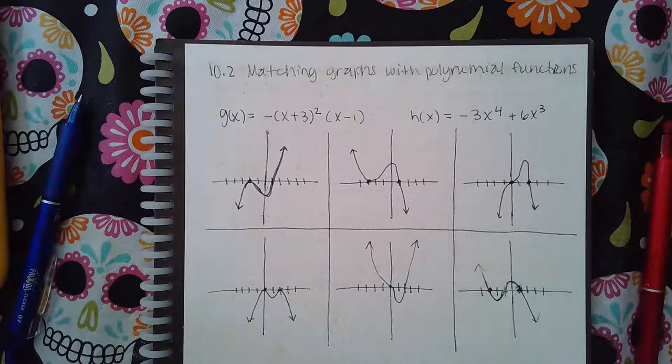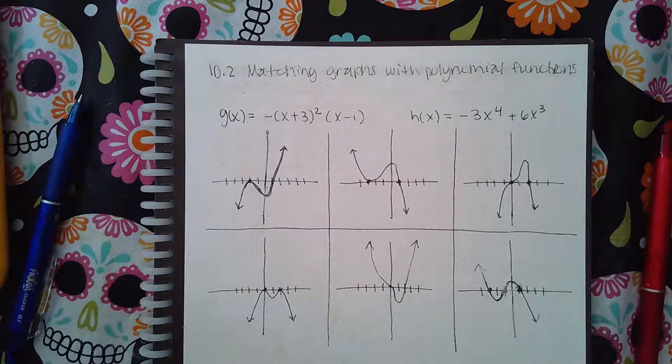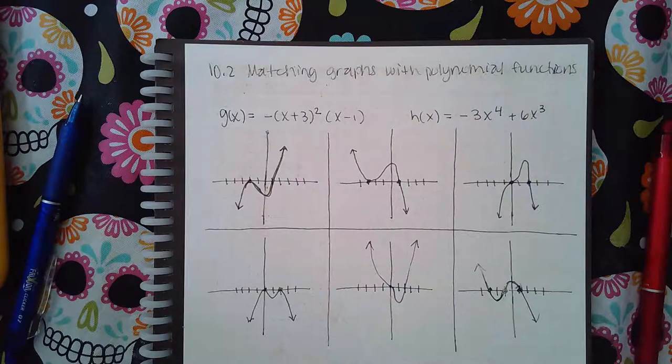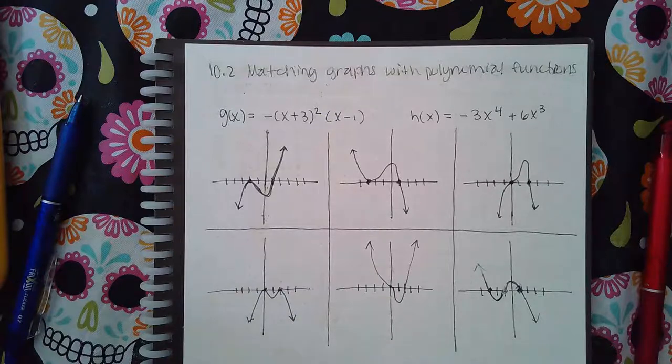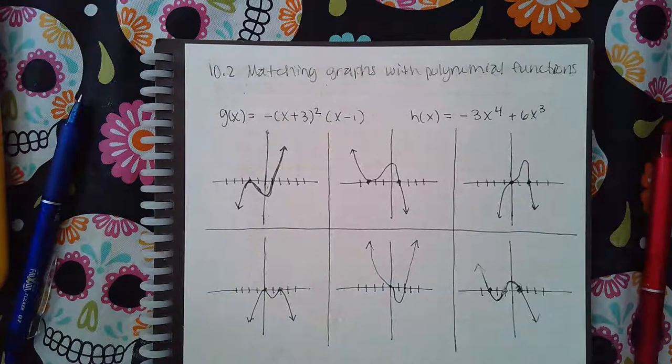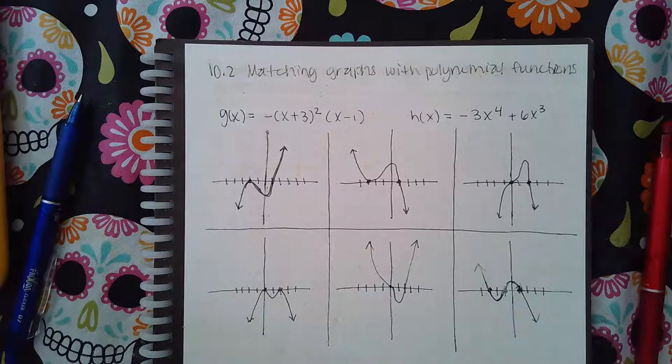So here we have 10.2 matching graphs with polynomial functions. What we really need to do is figure out what the zero x-intercepts are and the behavior around those zeros or x-intercepts. And then we also need to consider the end behavior.